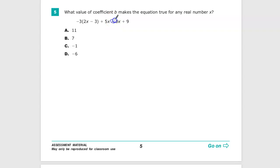The key issue here is that we have an equal sign, so we need to address that. So I have negative 3 times the quantity 2x minus 3 plus 5x equals bx plus 9.